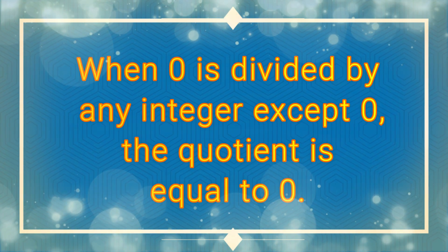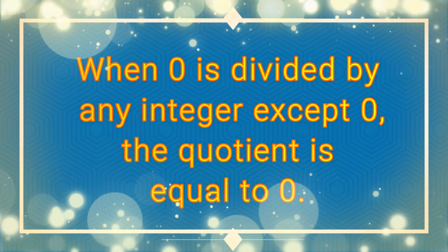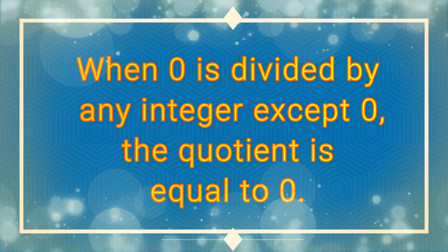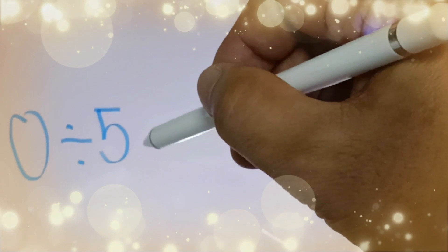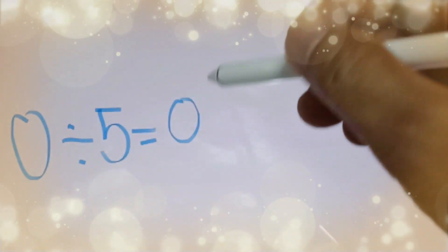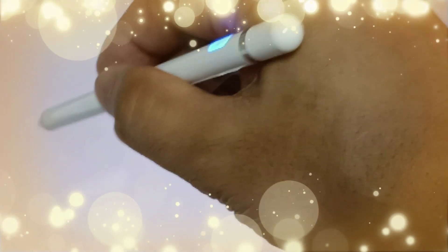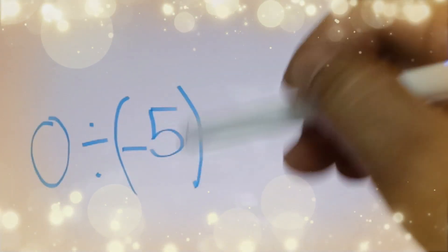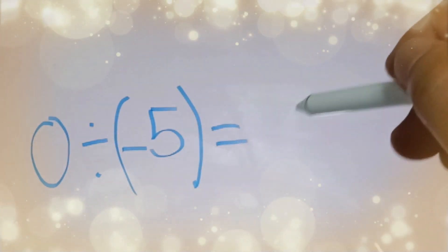When 0 is divided by any integer except 0, the quotient is equal to 0. For example, 0 divided by 5 is equal to 0. And 0 divided by negative 5 is also equal to 0.